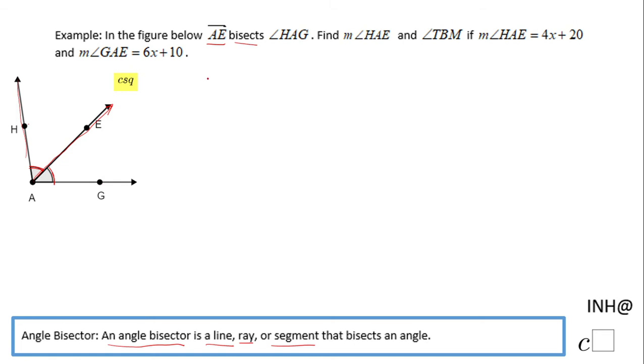So basically I can start with this statement: angle HAE congruent to angle GAE. These two angles are congruent. Why? Because AE is the angle bisector.